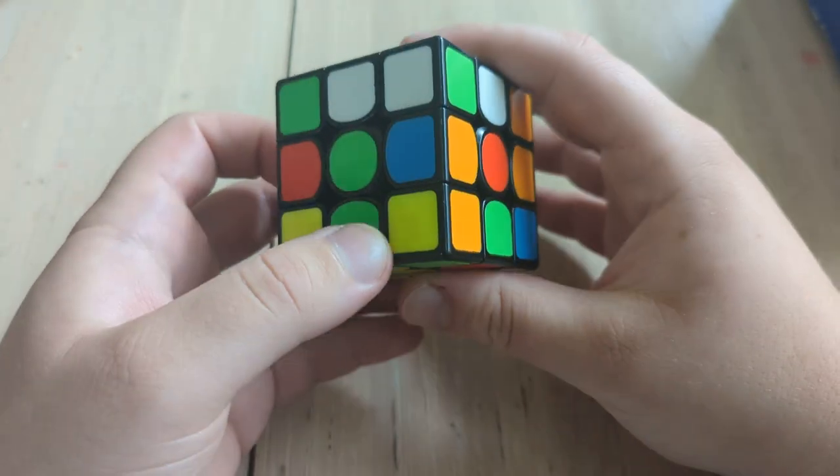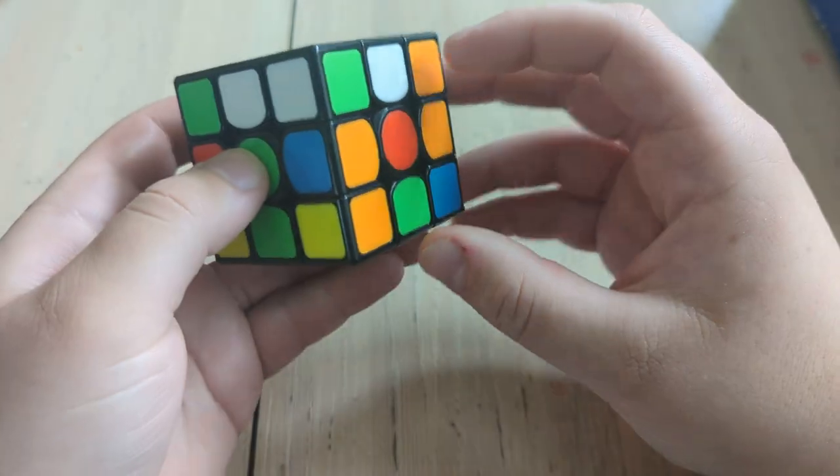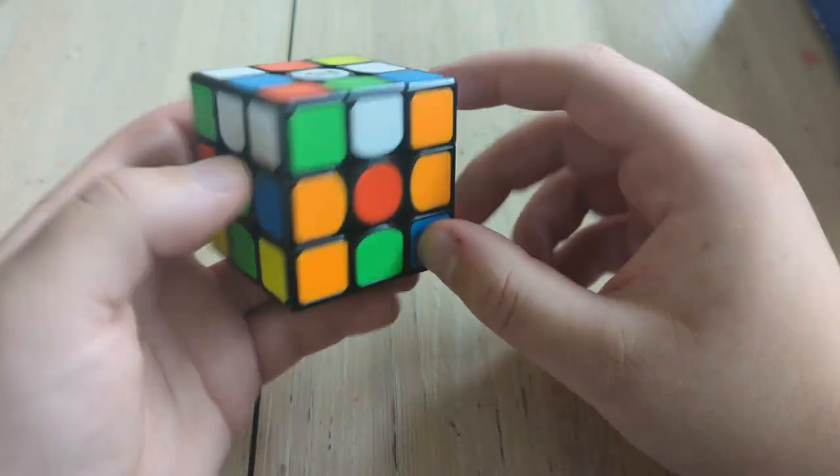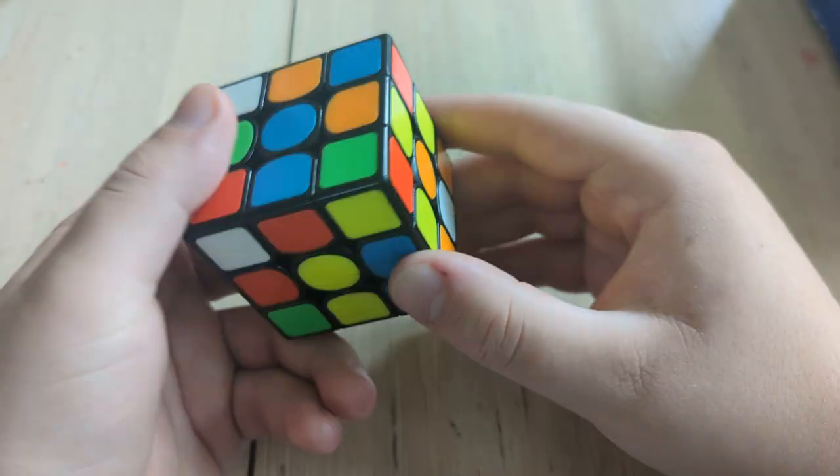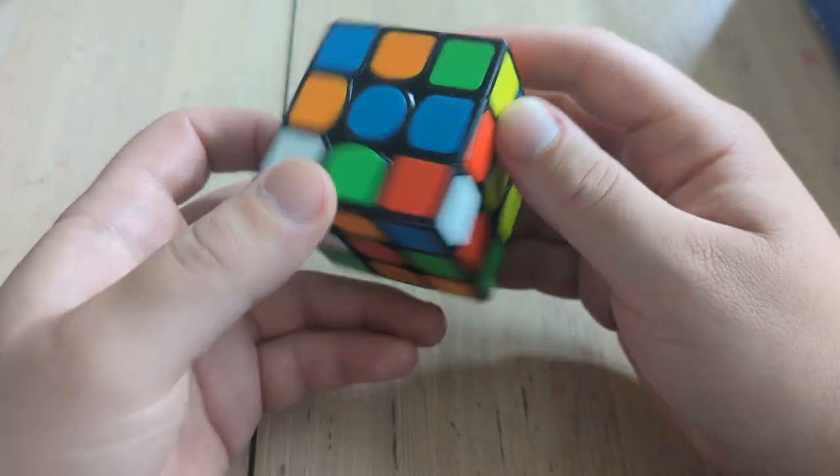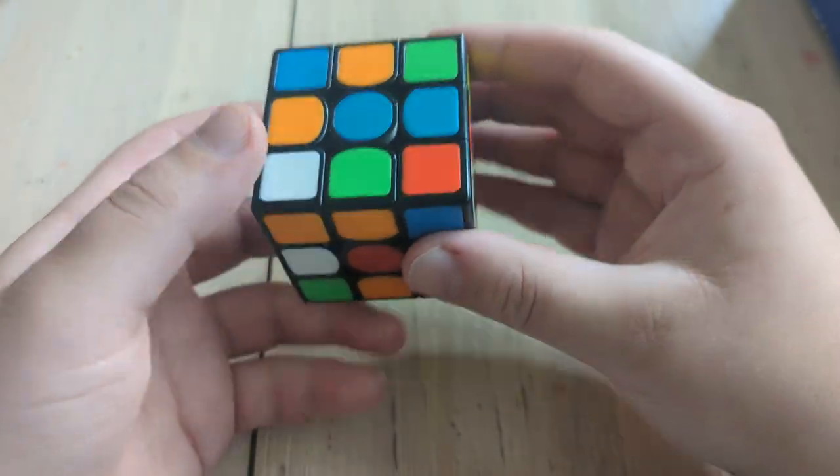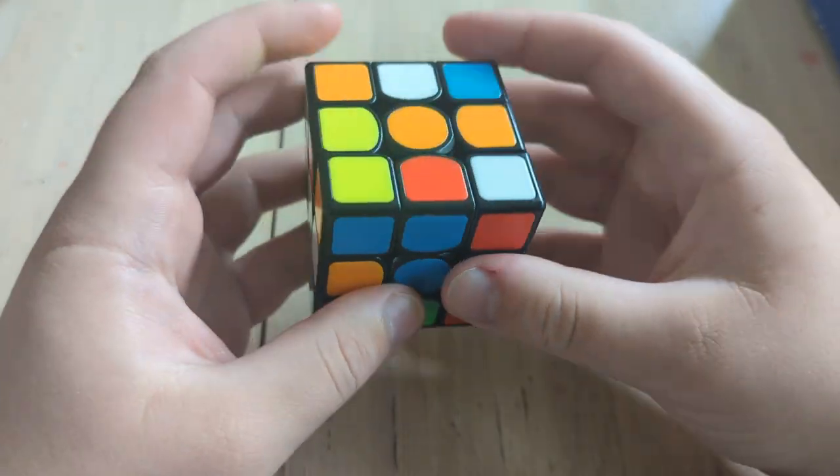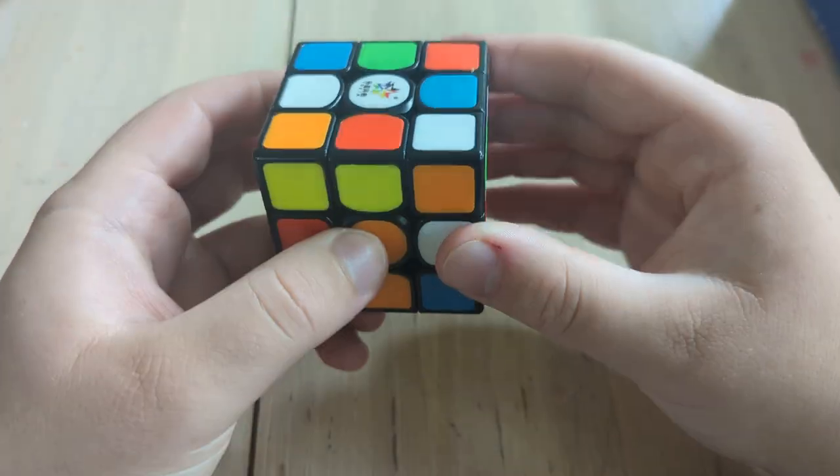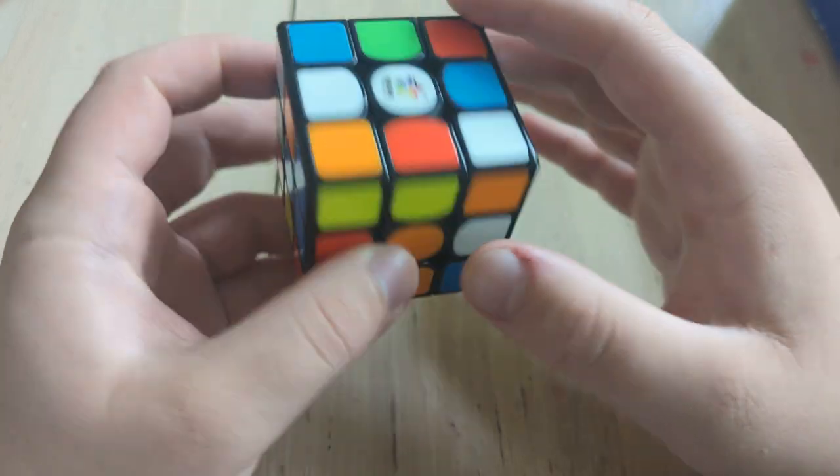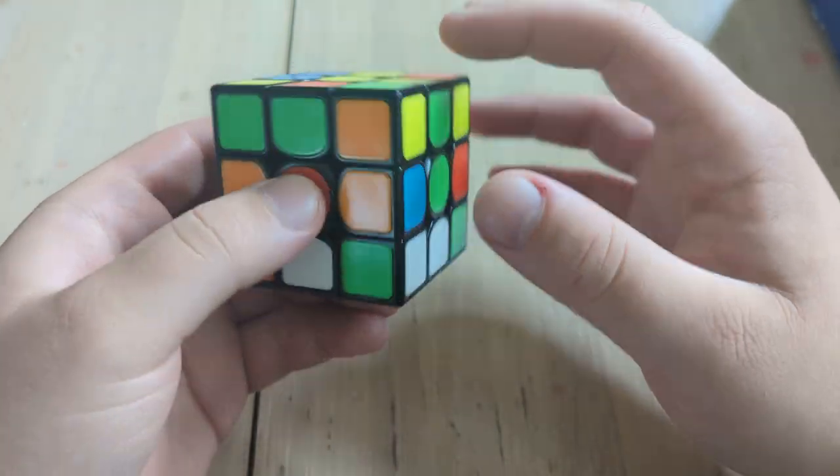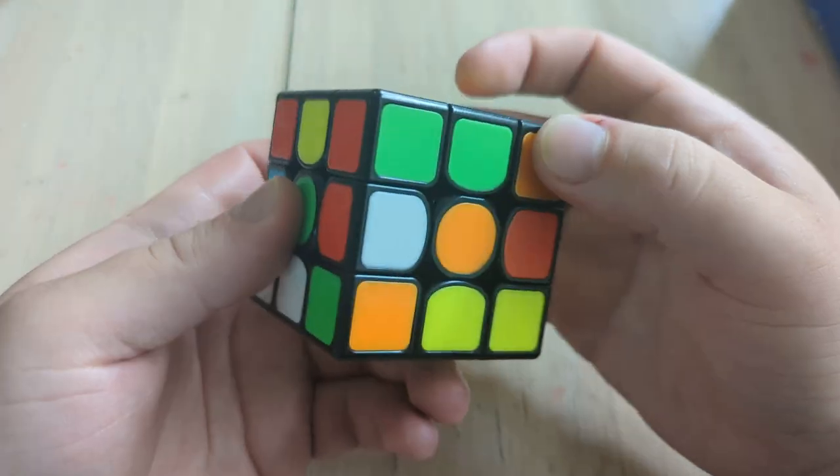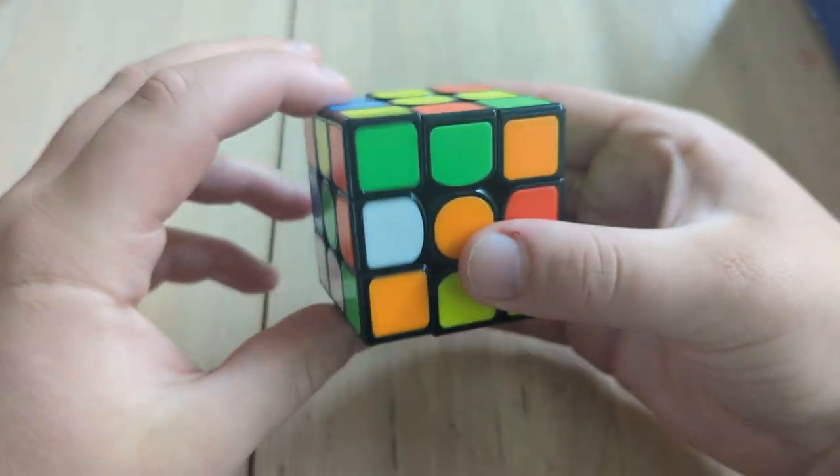So we'll treat white and yellow as the top and bottom, and we just need to get all of the edges that don't have any white and yellow into this layer. My brain is breaking from this, but these all have white or yellow on them. This one doesn't though, so we can pull this one in.